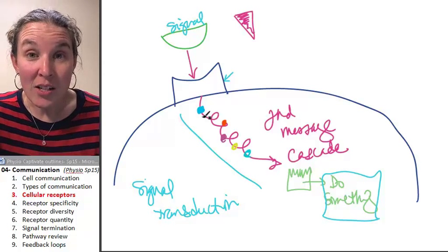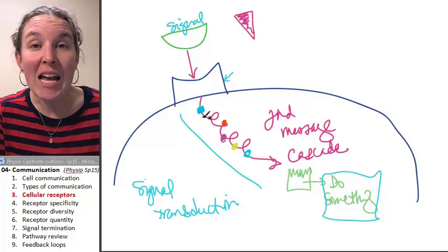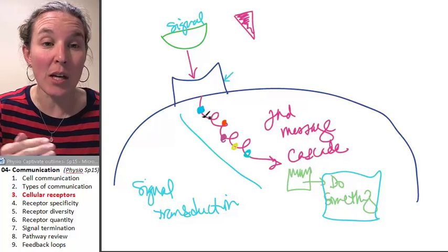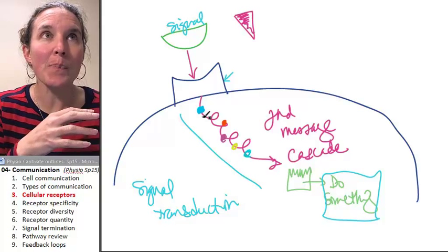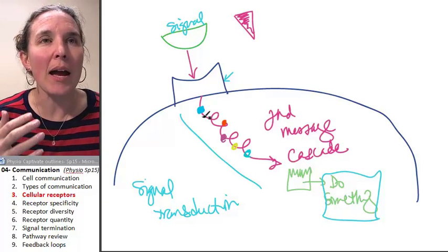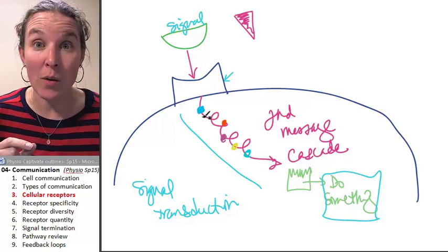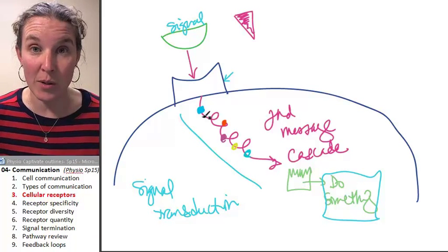So you can imagine that we can fine tune our ability to communicate with each other by what? By being really thoughtful about what's going on with the receptors.